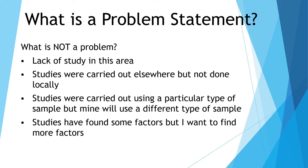The next one is: studies were carried out using a particular type of sample, but mine would use a different type of sample. Maybe previous studies were done on adults, but you want to carry out research on students. The question is: what's so different about students compared to adults? Your focus should be on articulating the differences of the samples — not just the fact that the samples are different, but explaining the characteristics or differences of this particular sample.